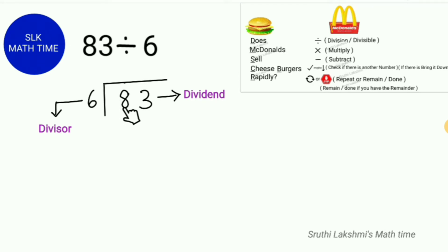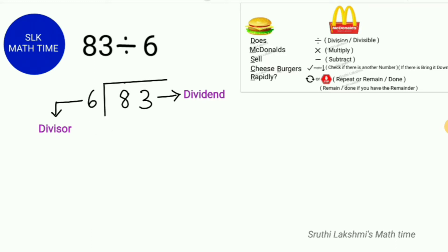Is 8 divisible by 6? Yes — one time. So we write a 1 up here. The second step is to multiply: we do 6 times 1, which is 6.